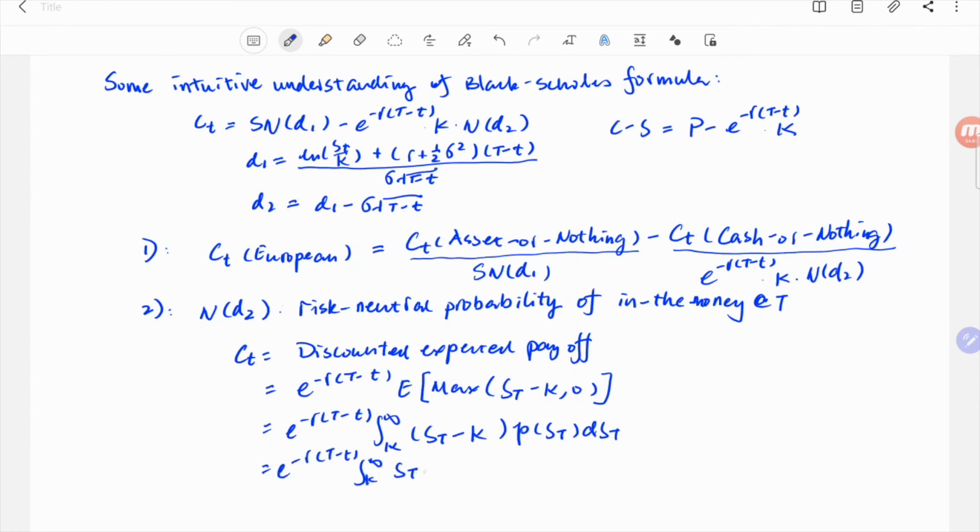Breaking S minus K into two terms and comparing the two integrals with the formula, we can see the second term, N(d2), is simply just integral of p(S) dS from K upward, which is in-the-money probability.